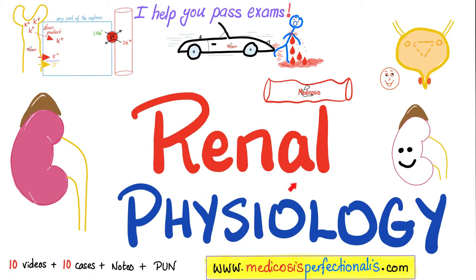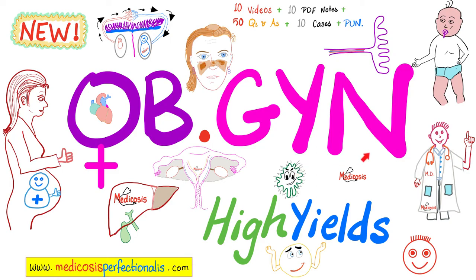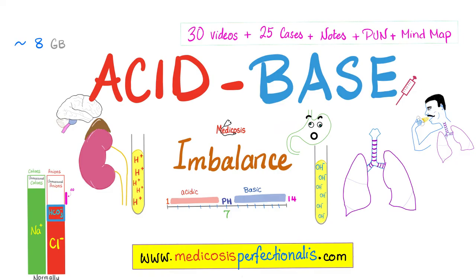To learn more about glomerular filtration rate, the Starling forces like hydrostatic pressure, oncotic pressure in the glomerulus and in the Bowman's capsule, and to learn about the proximal tubule, the loop of Henle, distal tubule, collecting ducts, etc., download my renal physiology course at medicosisperfectionalis.com. To learn about kidney function during pregnancy and kidney diseases during pregnancy and preeclampsia and eclampsia, download my OBGYN high yields course. To master the serum anion gap, serum osmolar gap, urine anion gap, and stool osmolar gap, you can download my acid-base imbalance course at medicosisperfectionalis.com.